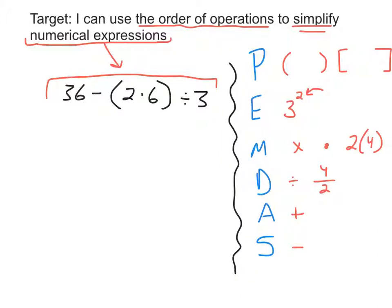So let's take a look at PEMDAS and this numerical expression. First I look at the numerical expression and I ask the question, are there any parentheses? P in PEMDAS stands for parentheses. A parentheses could look like this, or a bracket — something more like this. And sometimes inside the bracket there could be parentheses; those are called nested parentheses. So in this expression there are parentheses, and I would look inside and see 2 times 6. There's only one operation so I'm just going to do it. 2 times 6 is 12.